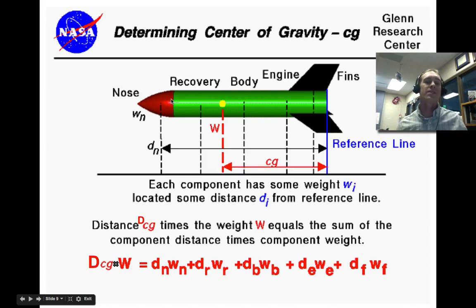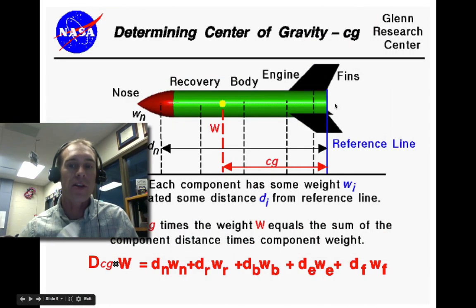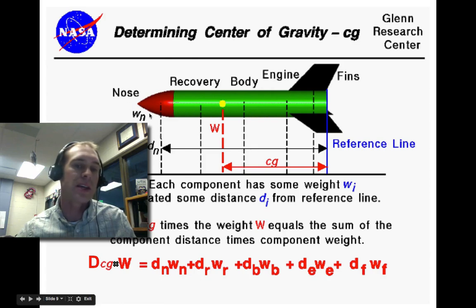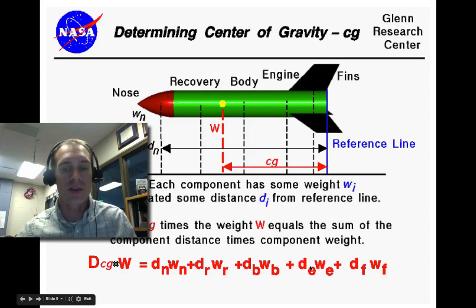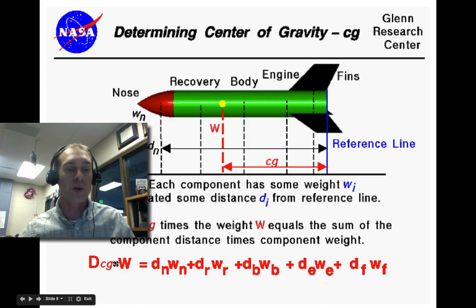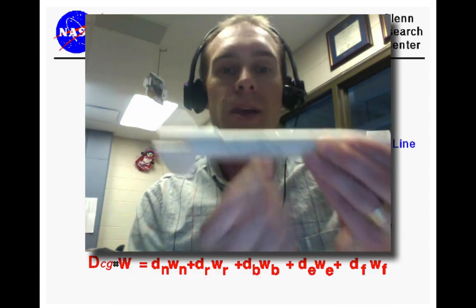Center of gravity is about finding where the center of gravity is for each component. If a component is uniform in size, it's right in the middle. The nose cone is not uniform, nor are the fins, so for the nose you may need to determine it by balancing. Using the reference line at the butt end of the rocket, take the weight of the nose times its distance, add that to the weight of the recovery system times its distance, then add all individual components' weight times their distance from the reference line. Divide the total by the total weight to get the distance to the center of gravity.